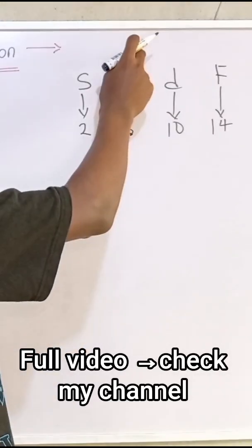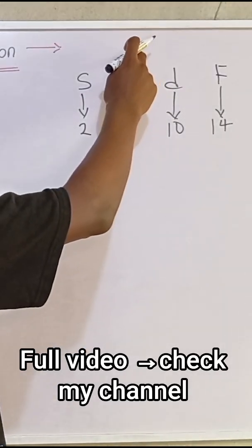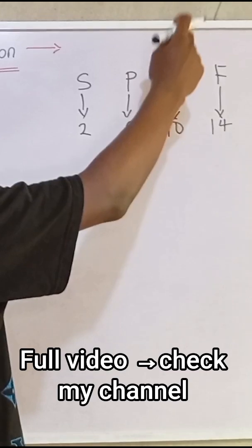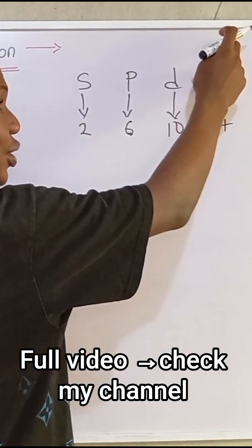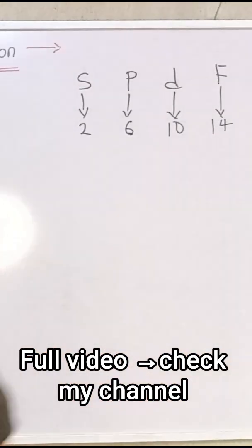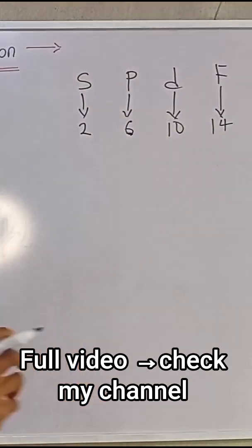S is spherical, P is dumbbell in shape, D is double dumbbell in shape, and F is complex. I hope you get that in case you don't know it before. Now the next thing we have to move up is the confusing part of this class.